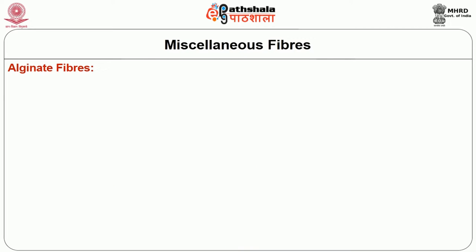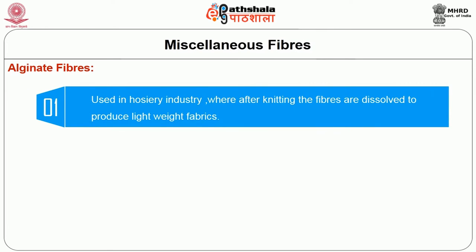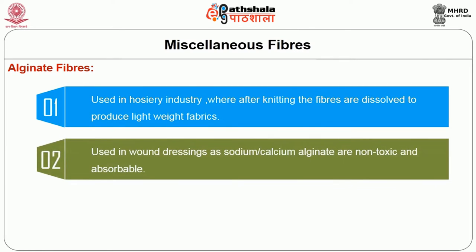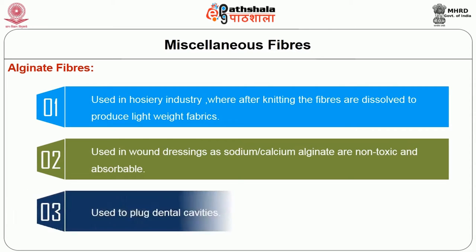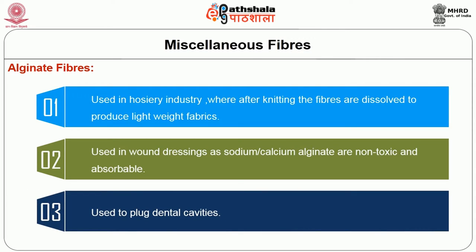However, the most valuable property of alginate fiber is their non-flammability. Alginate fibers are used in hosiery industry where, after knitting, the fibers are dissolved to produce lightweight fabrics. They are used in wound dressings as sodium or calcium alginate, as they are non-toxic and absorbable. They absorb the wound exudates and allow wound healing to happen quickly. They are also used to plug dental cavities.